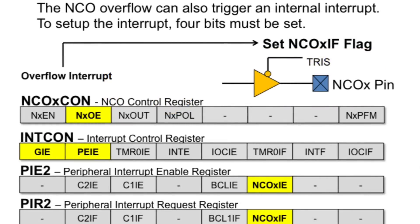The NCO overflow can also trigger an internal interrupt. To set up the interrupt, four bits must be set: the NCO enable bit in the NCO control register, the global interrupt bit and the peripheral interrupt enable bit in the interrupt control register, and the NCO interrupt enable bit in the peripheral interrupt enable register. The interrupt flag NCOIF bit in the peripheral interrupt request register will be set to 1 when the interrupt occurs and will move code operation to the interrupt reset vector. The NCO IF bit must be cleared in software before exiting the interrupt service routine. The NCO interrupt flag will be set on the accumulator overflow even if interrupts are turned off, allowing software to use a polling method to monitor that bit.